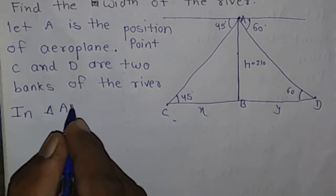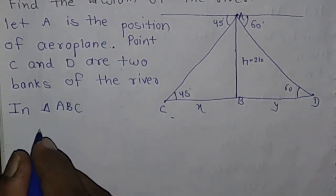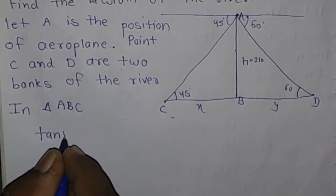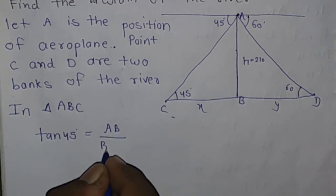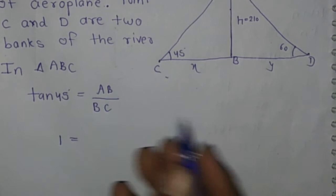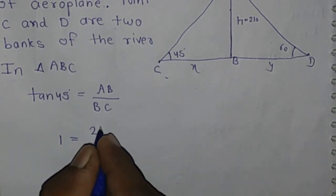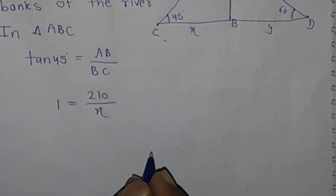In triangle ABC, we apply tan 45°, which equals perpendicular over base. Tan 45° equals 1. The perpendicular is AB with value 210 meters, and the base is BC which is x. So 1 = 210/x, therefore x = 210 meters.